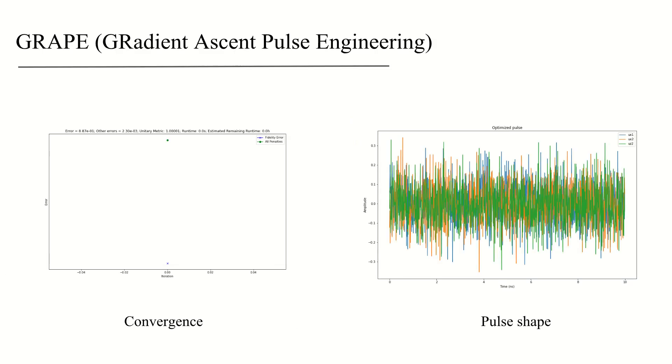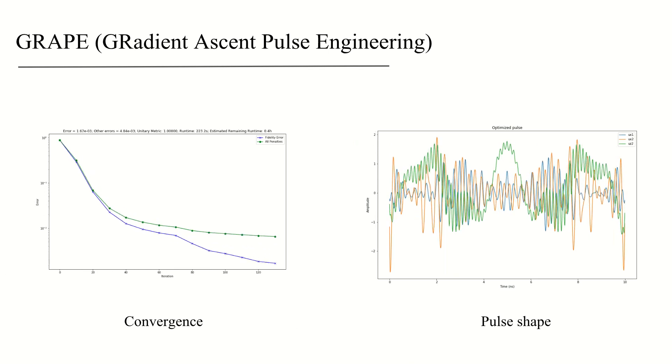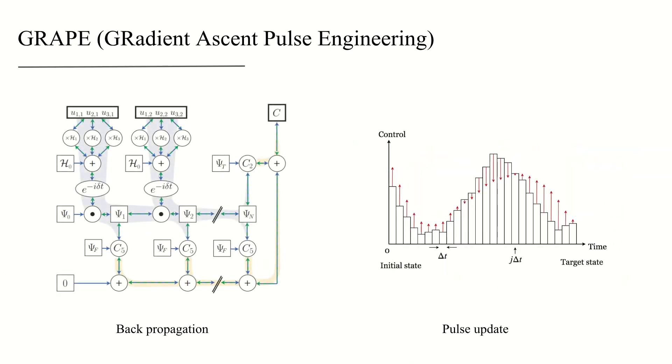One of the most widely used algorithms is the GRAPE algorithm. It iteratively updates the control pulse shape based on the calculated gradient at each step until convergence. Our GRAPE implementation was based on TensorFlow with the help of auto-differentiation and backpropagation.